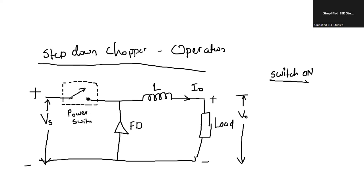During the ON condition, the conduction will be taken by the switch. It is closed. So current starts flowing — let me draw the direction of current. Current starts flowing through the inductor.